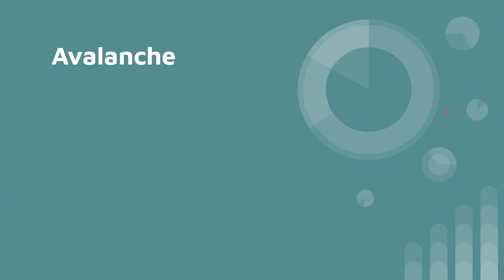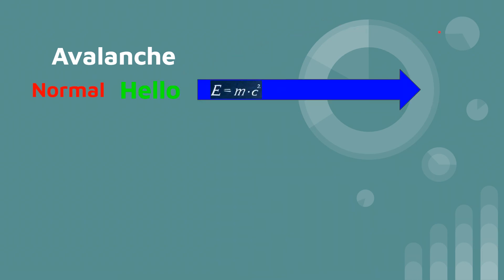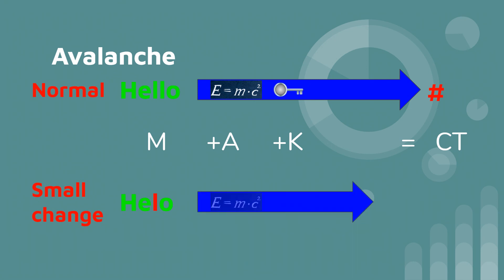Avalanche is simply when a small change in the plaintext results in a large change in the ciphertext so for example here's the unchanged message hello it runs through your algorithm with your key and it generates the ciphertext just the number sign or the hashtag. Let's make a small change to the message let's delete one of the L's so now we have helo or hello with one L we're going to run it through our algorithm we're going to give it a key and as you can see our ciphertext has changed quite a bit.